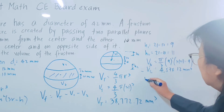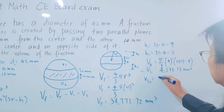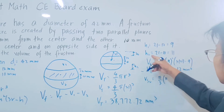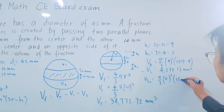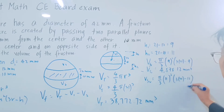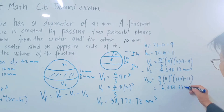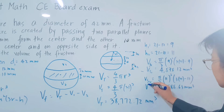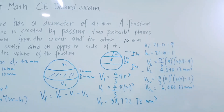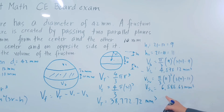Now, for spherical segment 2, we have V2 = π/3 × 11² × (3×21 − 11), where h2 is equal to 11 and r is equal to 21. The volume of the second spherical segment is equal to 6,585.63 mm³. This is V2.